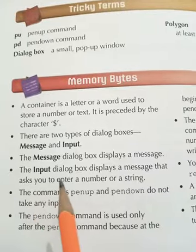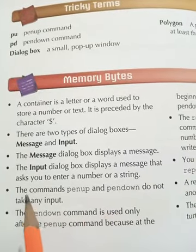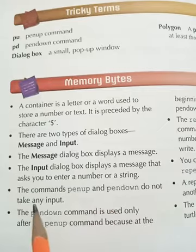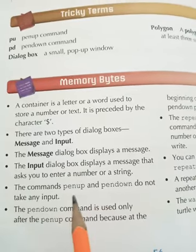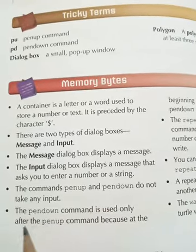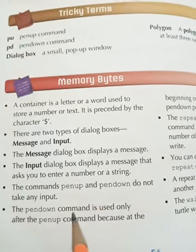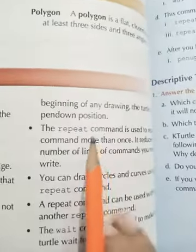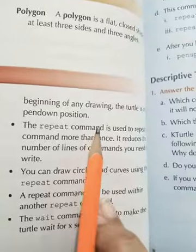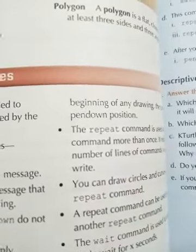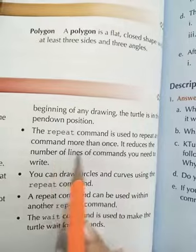Now there are memory bytes. A container is a label or a word used to store a number or text. It is preceded by the character dollar. There are two types of dialog boxes: message and input. The message dialog box displays a message. The input dialog box displays a message that asks you to enter a number or a string.